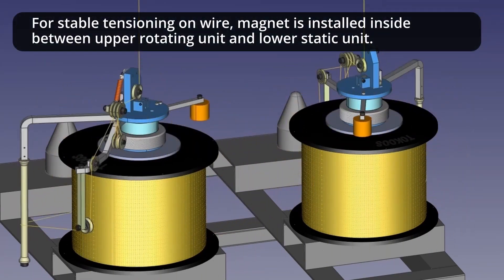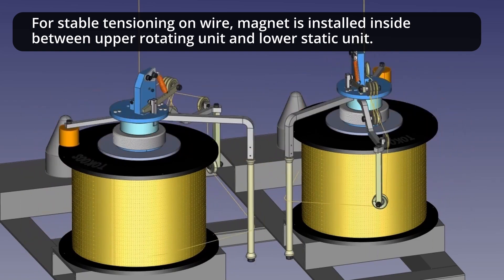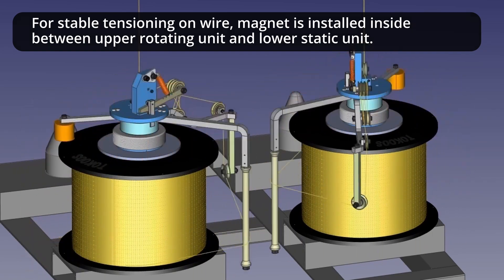For stable tensioning on the wire, magnet is installed inside between upper rotating unit and lower static unit.